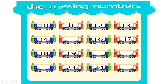Come to the second set of train. The first box is 14, the second box is missing, the third box is 16, and the fourth box is 17. After 14 what will come? Can you say? Right — 15. After 16, 17 is there.